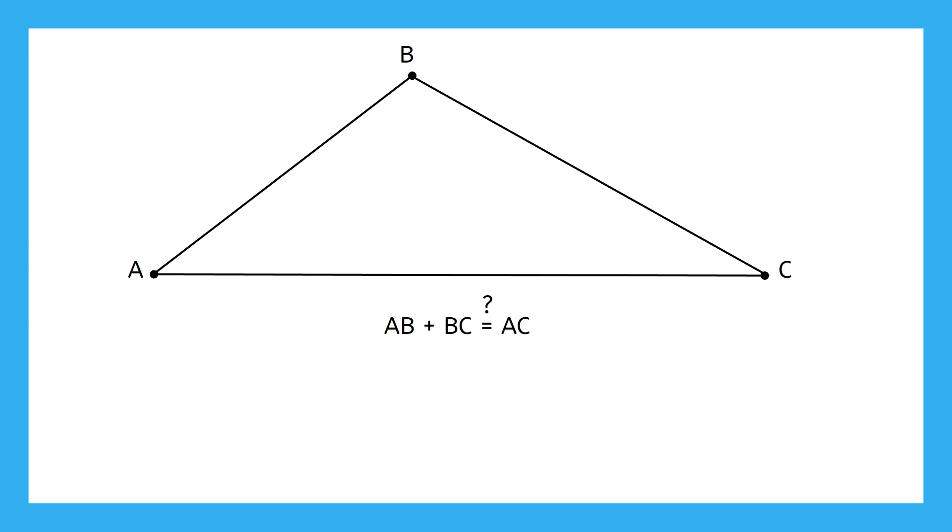I bet you're thinking no. And that's right. AB plus BC actually add up to be more than AC. What about now if we move point B down a little bit? AB and BC are still greater than AC. How about now if B moves down even more? Still not equal. How far down would we have to move point B for this to become an equal sign? When could these numbers actually apply and be true?